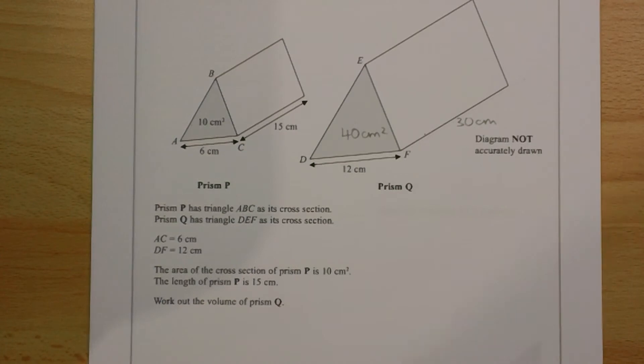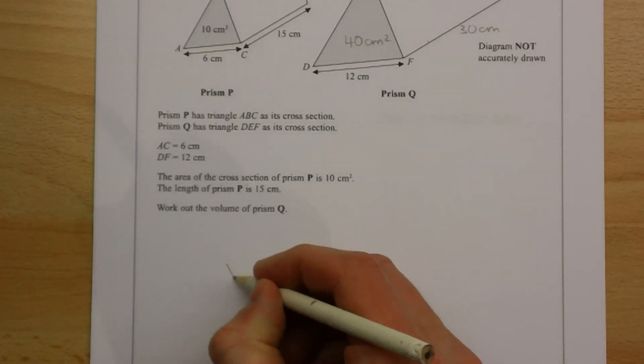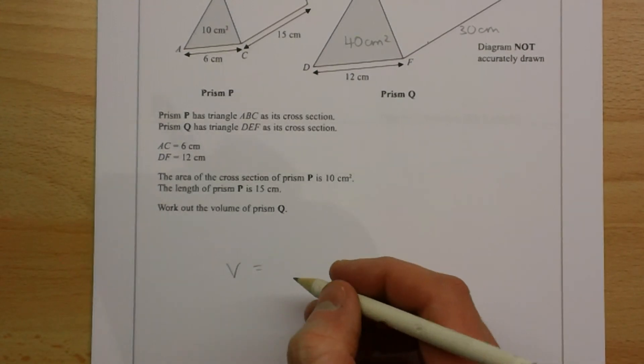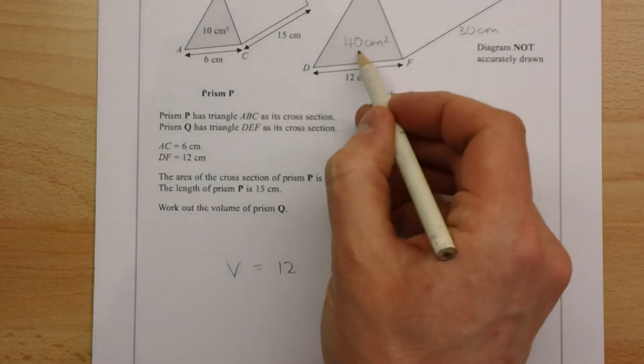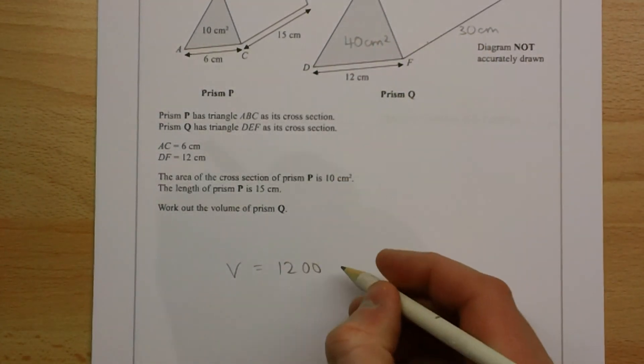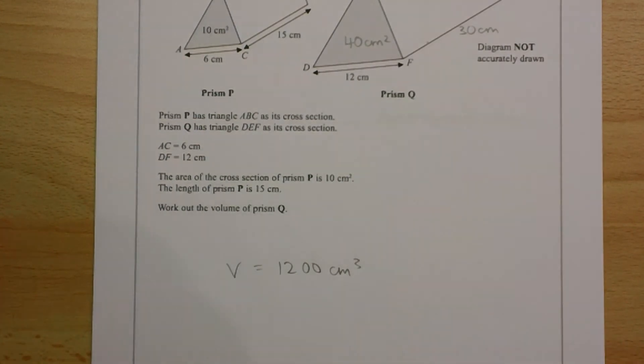Hence the area of the cross section is going to be 40 centimeters squared, and therefore the volume of prism Q is going to be 40 times 30 which is 1200 centimeters cubed.